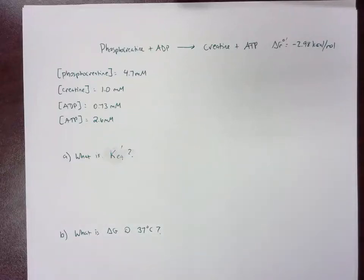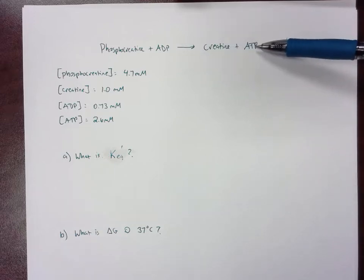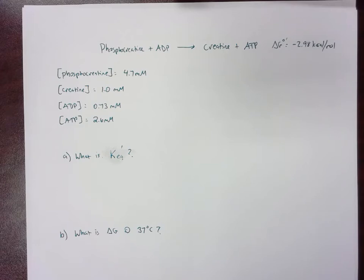In this video, I'm going to show you how to do a very simple delta G calculation involving non-standard conditions for a reaction involving phosphocreatine. Phosphocreatine will donate a phosphate to ADP, forming ATP. This happens during the first few seconds of intense exercise in the skeletal muscles as well as in the brain tissue.